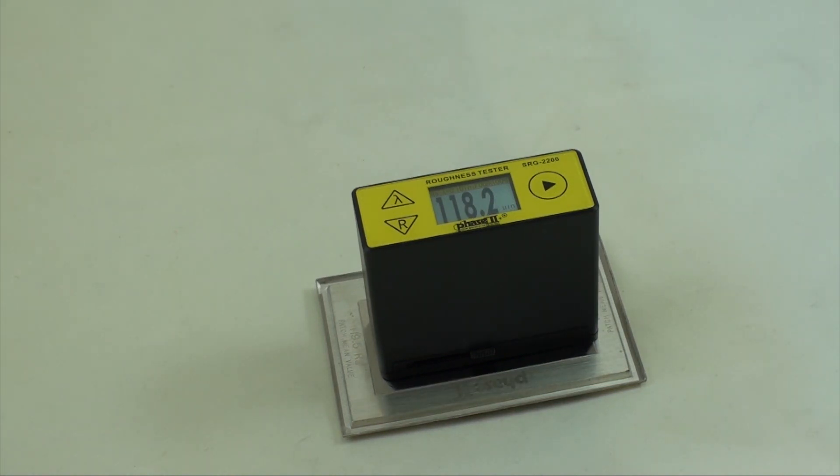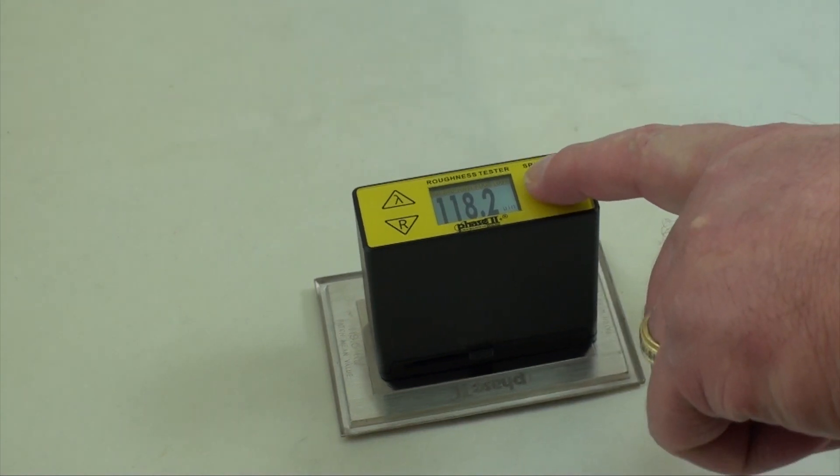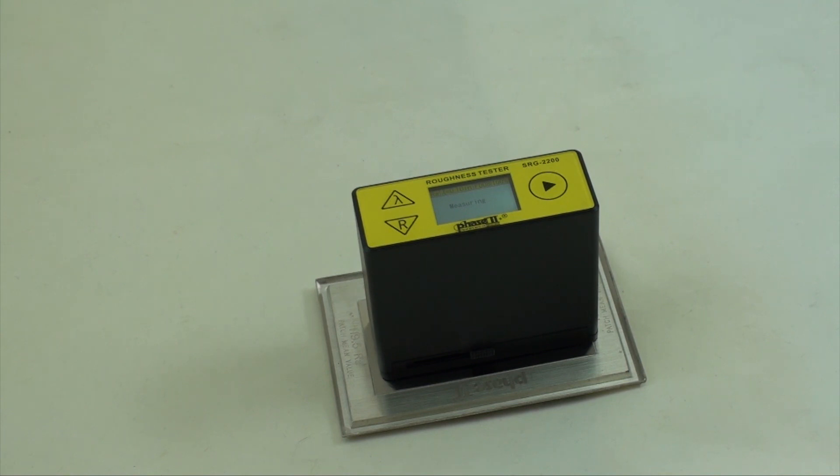To take a test, position the unit over the area to be tested. Press the power start button to begin the test. Once the screen blinks twice, the measurement is completed and the results will show up on the display.